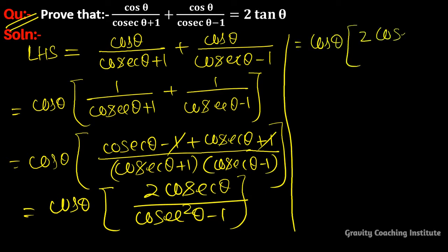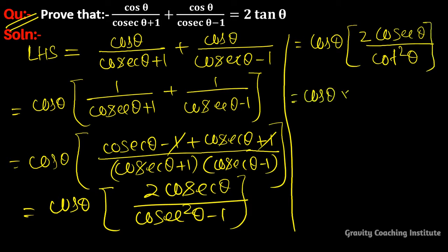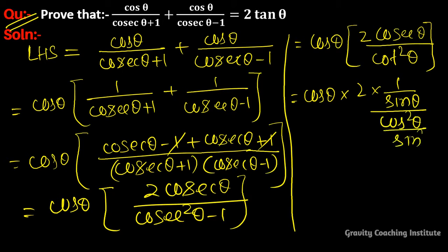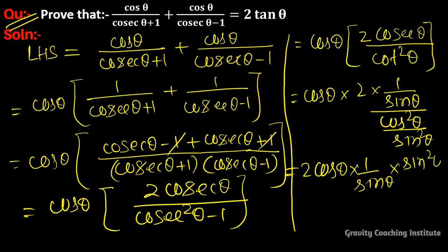Now, cosec²θ - 1 equals cot²θ. So we have cos θ into 2 into (1/sin θ) into (sin²θ / cos²θ), which simplifies to 2 cos θ into (1/sin θ) into (sin²θ / cos²θ), giving 2 sin θ / cos θ, which equals 2 tan θ.